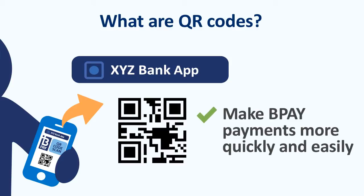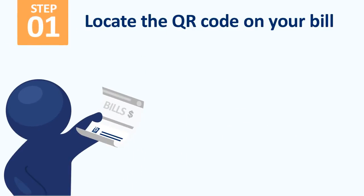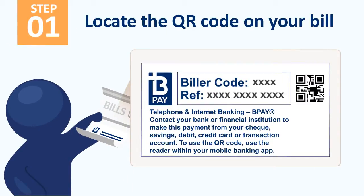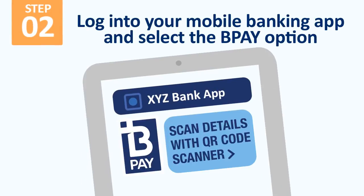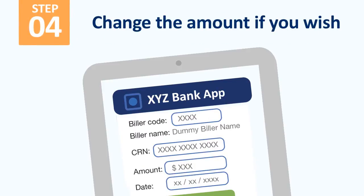Let's look at how much easier it is to make a payment. Locate the QR code on your bill, which will appear next to the BPAY payment box. Log in to your mobile banking app and select the BPAY option. Using the QR code scanner within your mobile banking app, scan the QR code on your bill. The BPAY payment screen will be populated with all the important information about your BPAY payment.